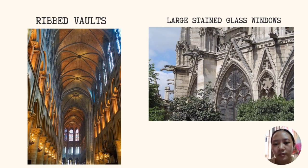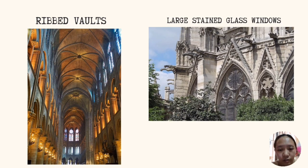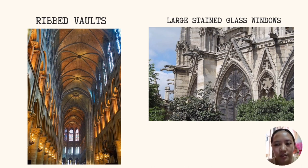The third element is rib vaults. In order to incorporate higher ceilings and taller windows into their designs, Gothic architects utilize a new method of structural support called rib vaulting. Rib vaulting involves the use of intersecting barrel vaults — arches placed parallel to one another in order to support a rounded roof. In addition to showcasing a more decorative aesthetic than traditional barrel vaults, these crisscross constructions offer increased support for sky-high buildings.